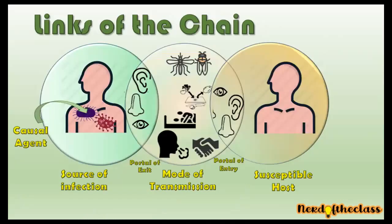Traditionally, the links of the chain are six: causal agent, source of infection, portal of exit, mode of transmission, portal of entry, and susceptible host — in that order.